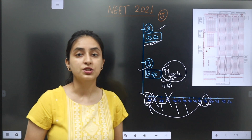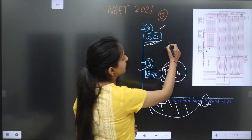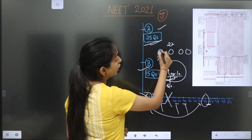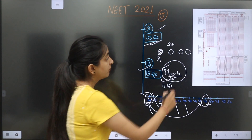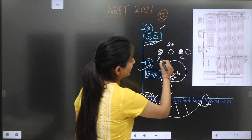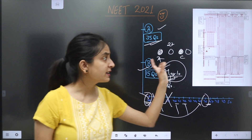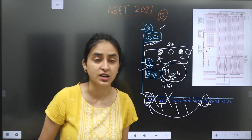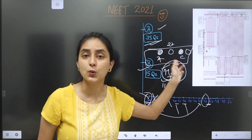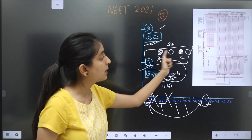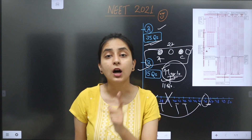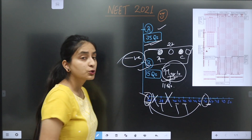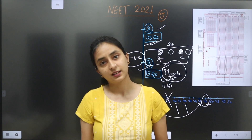One more thing: many students think that if they first mark option A and then change to option C in the same question, both bubbles are filled. In this case, it will be counted as a wrongly attempted question — meaning negative marking applies. So if you fill two bubbles for any question, it will be counted as a wrong answer. Don't fill two bubbles in any question.